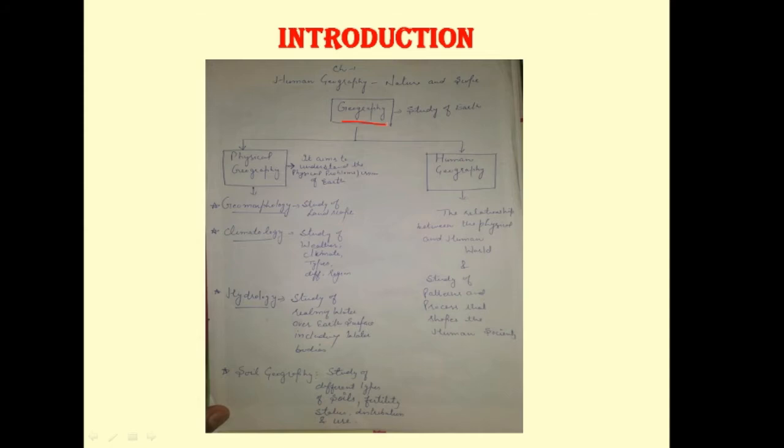There is also a third type of geography known as biogeography, in which we study about flora and fauna. It is also related to a topic in physical geography. We study about geomorphology, climatology, hydrology, and soil geography. Geomorphology is the study of landscapes. Climatology: we study about weather, climate types, and different regions. Hydrology: we study about realms of water over earth surface, including water bodies. Soil geography: the study of different types of soils, fertility status, distribution, and its use.